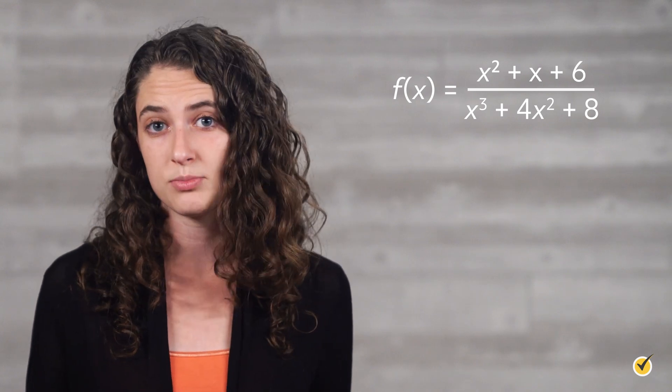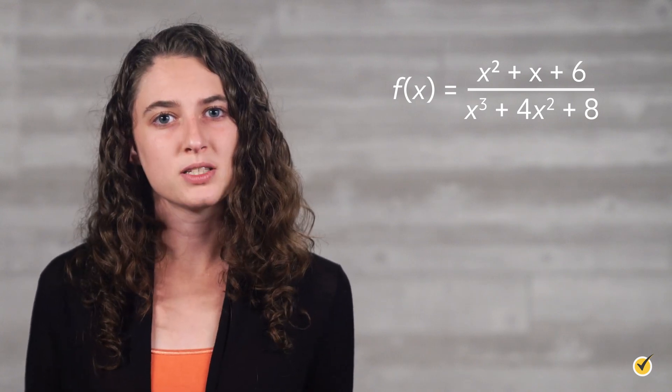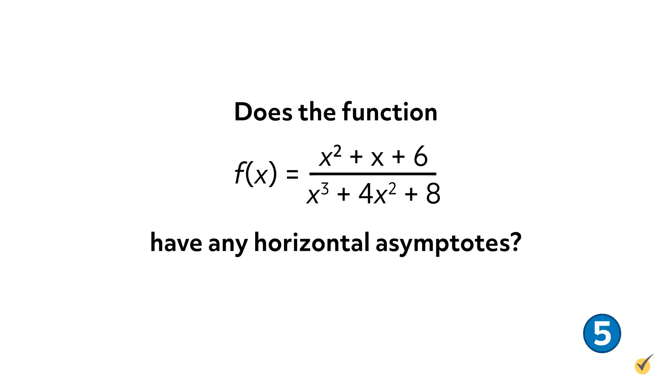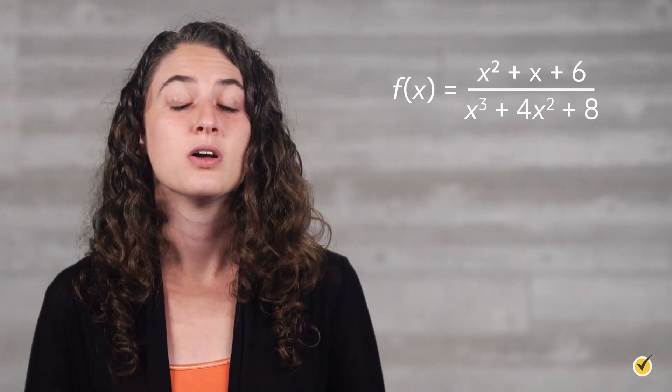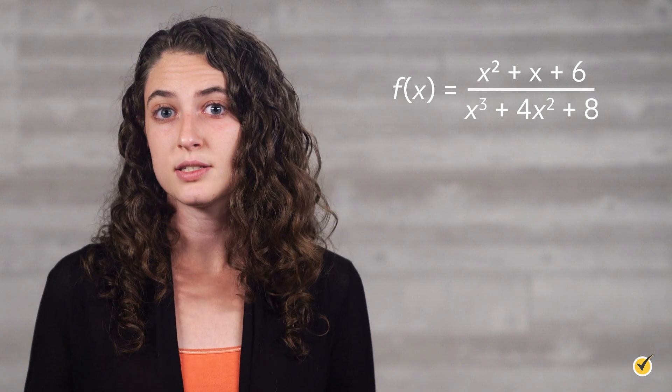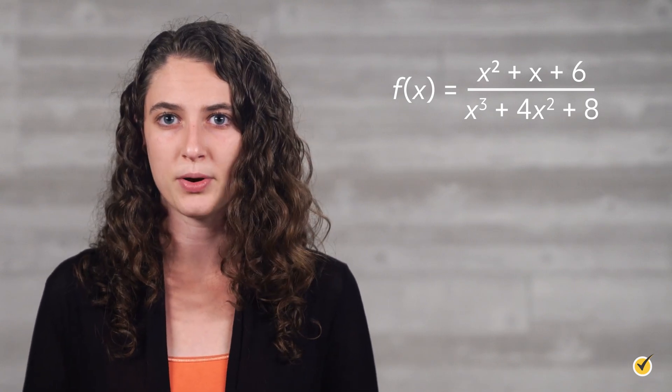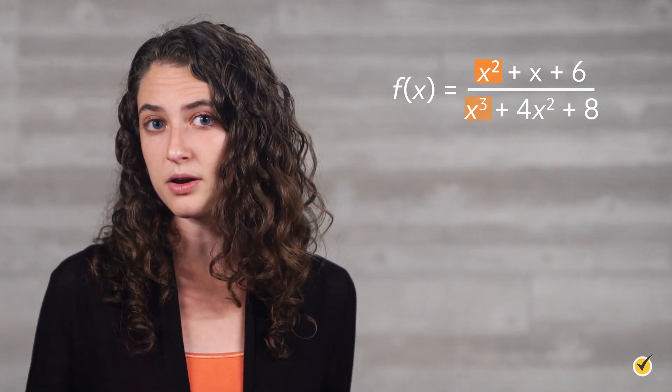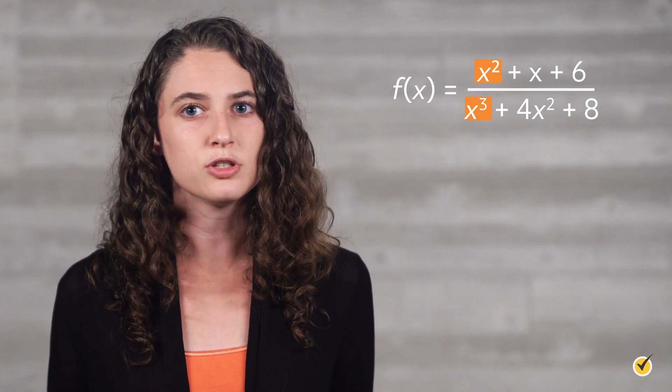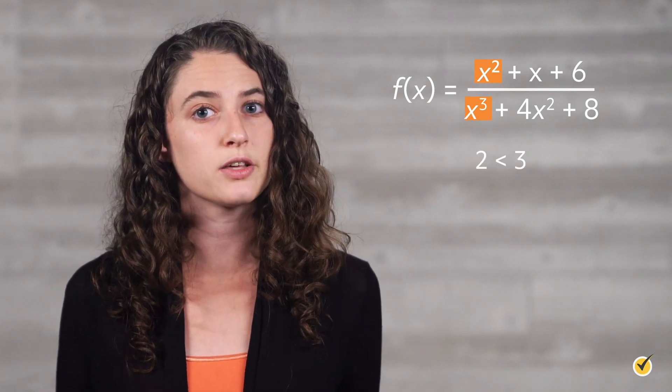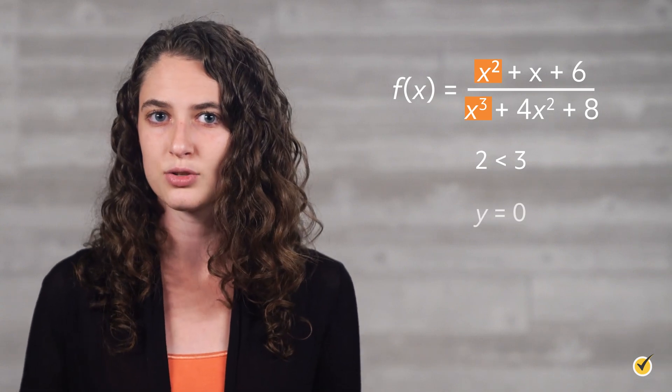Let's look at one more example. Does the function f of x equals x squared plus x plus 6 over x cubed plus 4x squared plus 8 have any horizontal asymptotes? If so, where? Feel free to pause the video here and give it a shot yourself. How did you do? Let's compare. Just like in the previous examples, you must determine which term in the top has the highest power and which term in the bottom has the highest power. On the top we have the term x squared and on the bottom we have x cubed. Comparing their exponents, we see that 2 is less than 3, which tells us that there should be a horizontal asymptote along the x-axis, y equals 0.